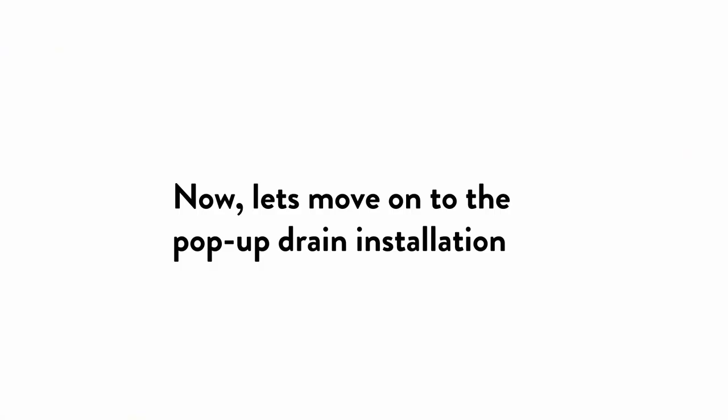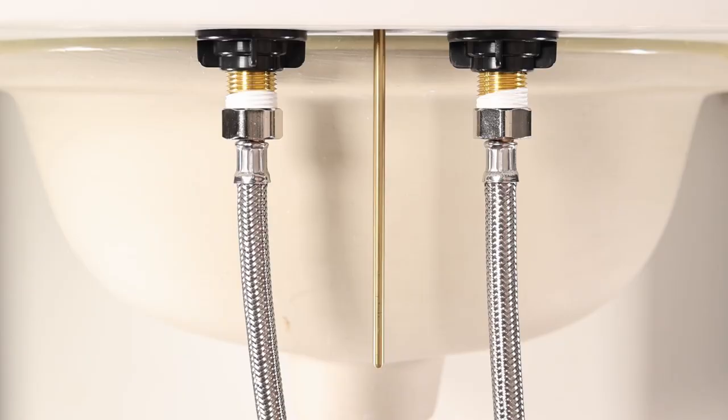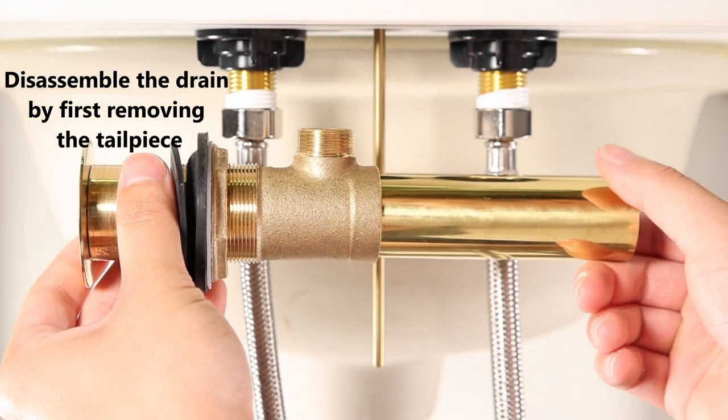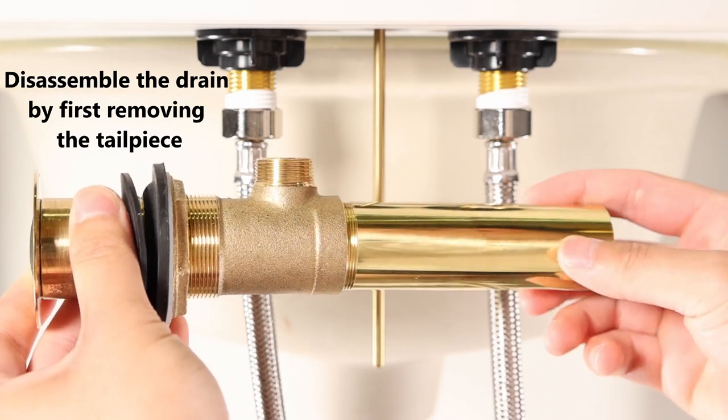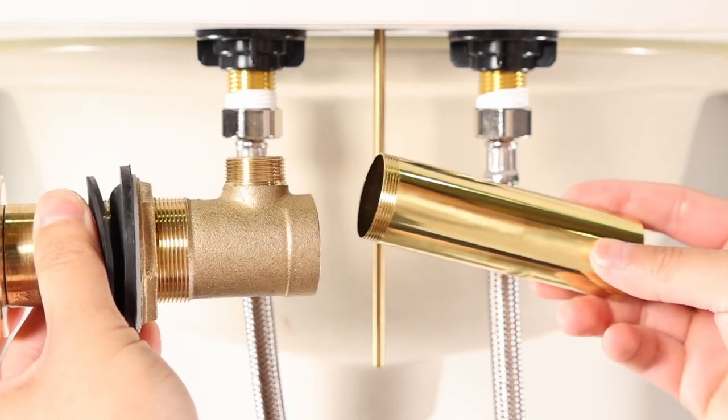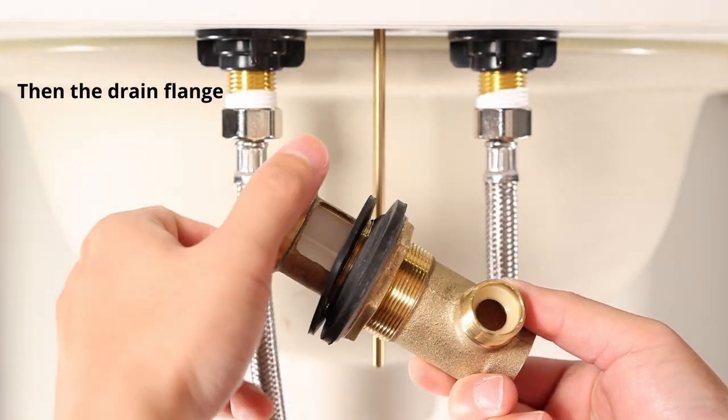Now, let's move on to the pop-up drain installation. Disassemble the drain by first removing the plunger, then the drain flange.